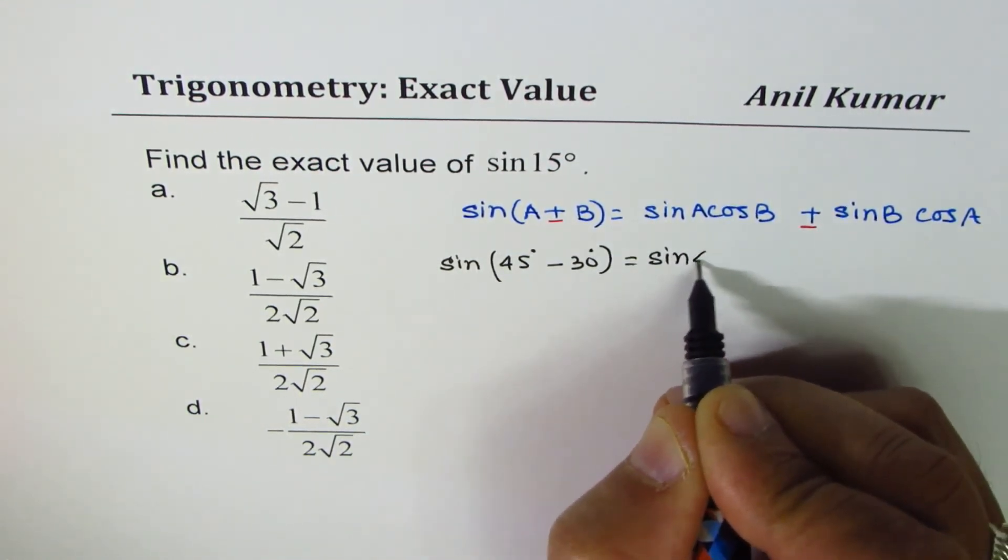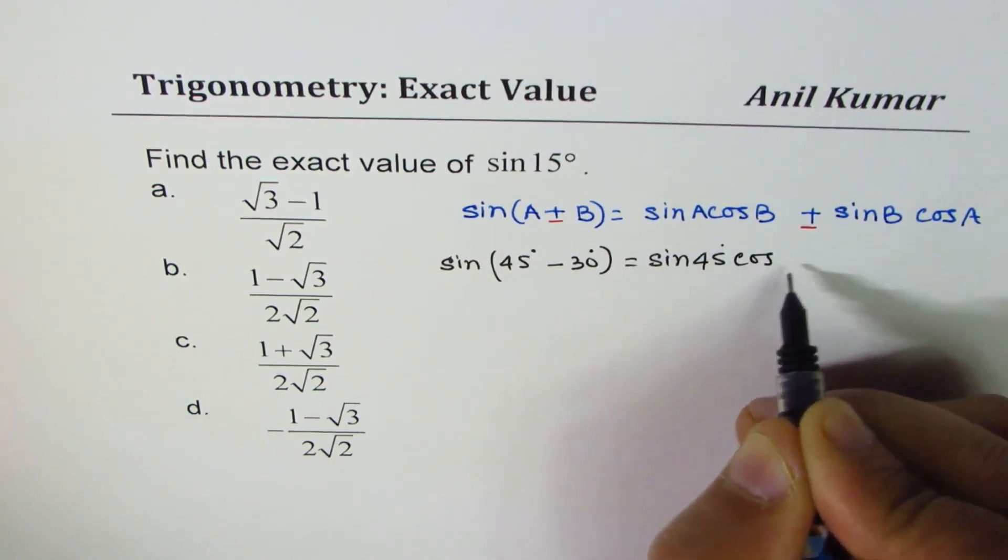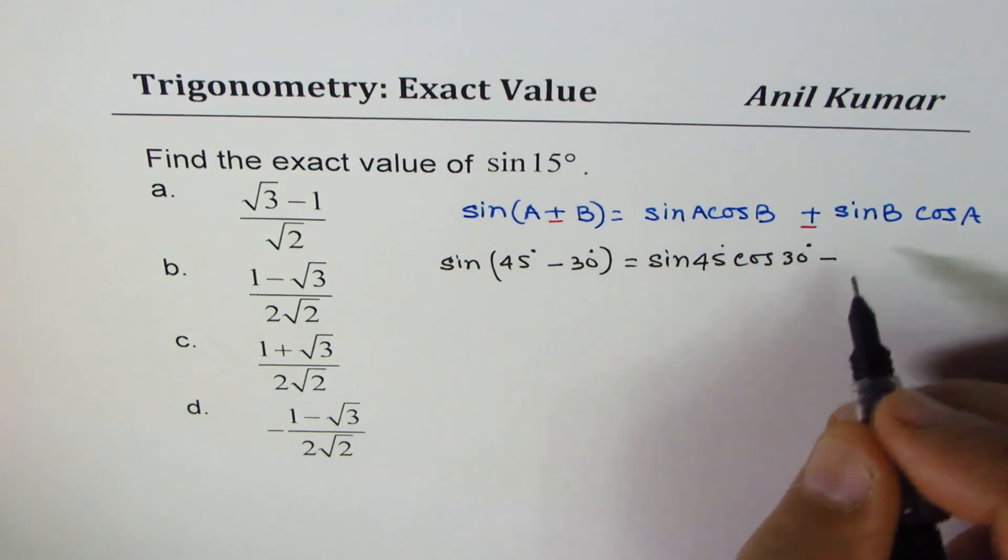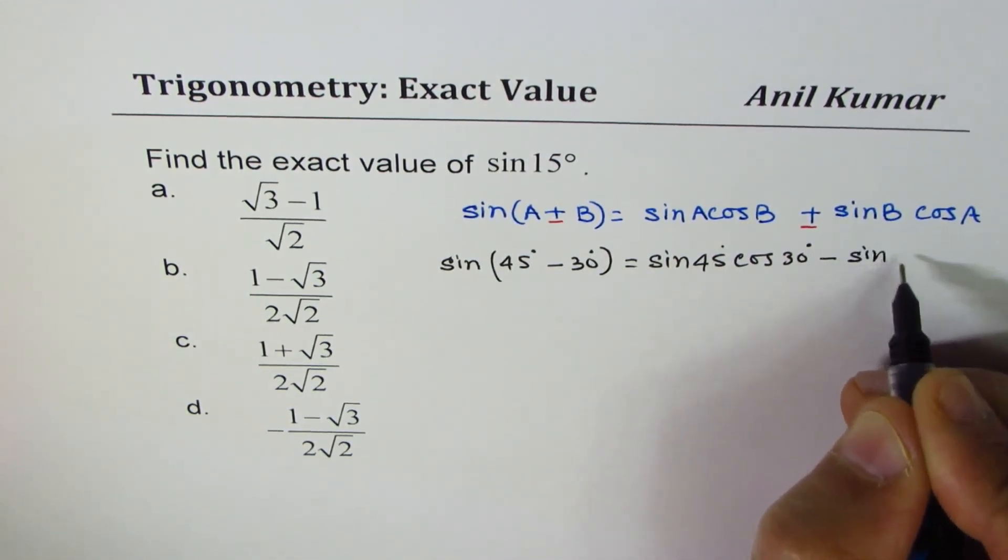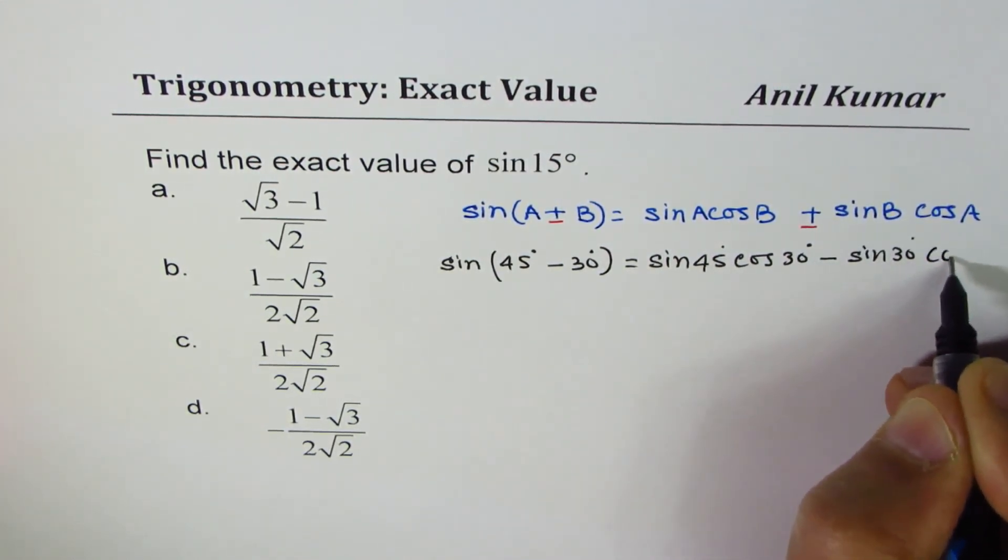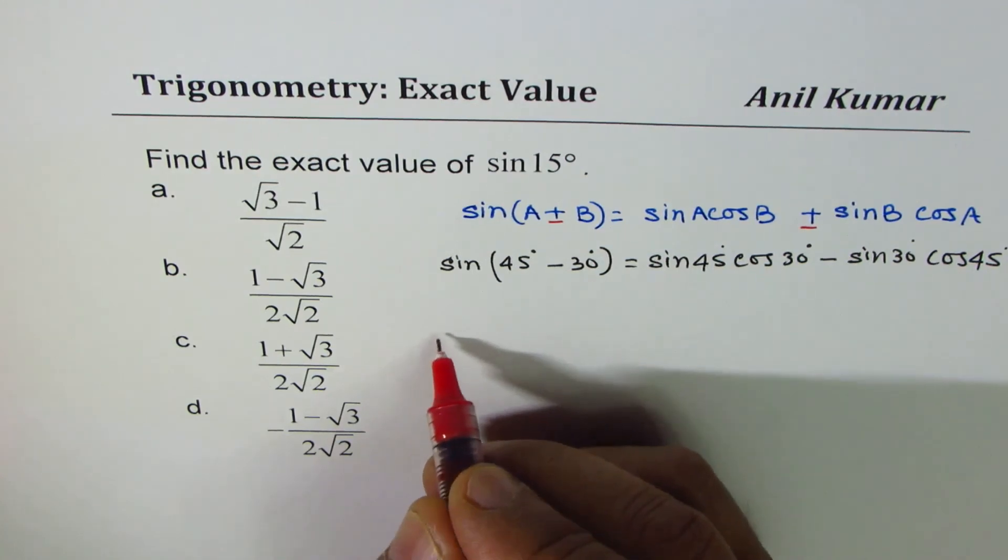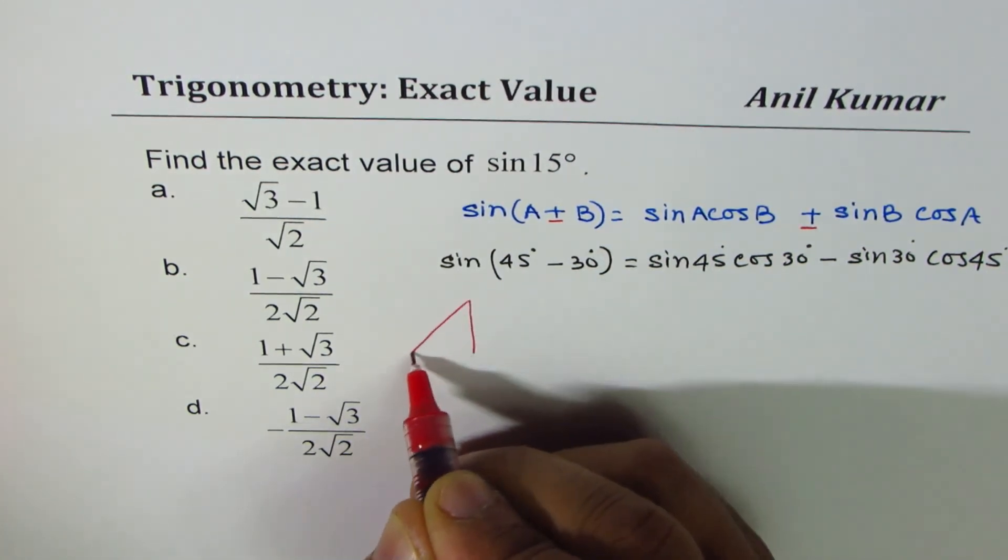Expanding, we get sin 45 degrees cos 30 degrees minus, so we take minus here, sin 30 cos 45 degrees. Two special triangles once again.